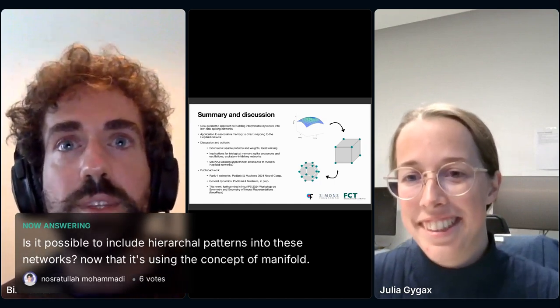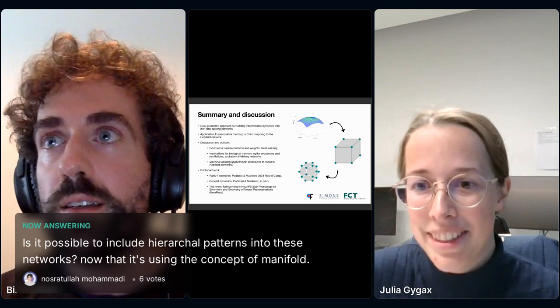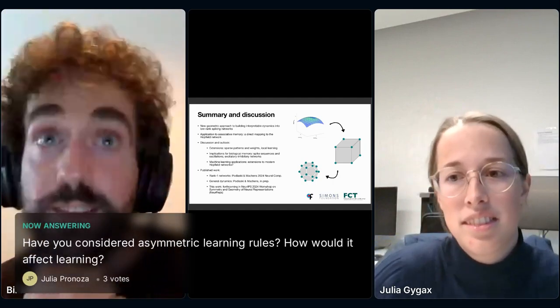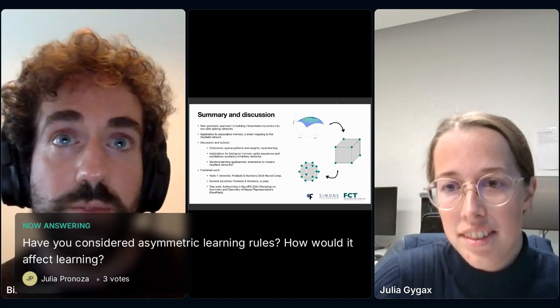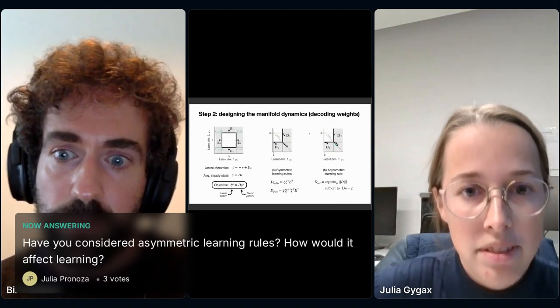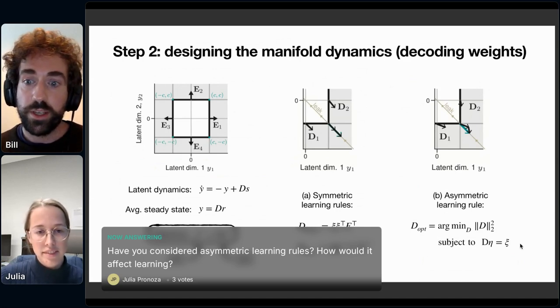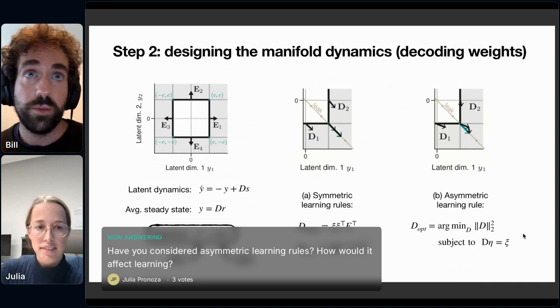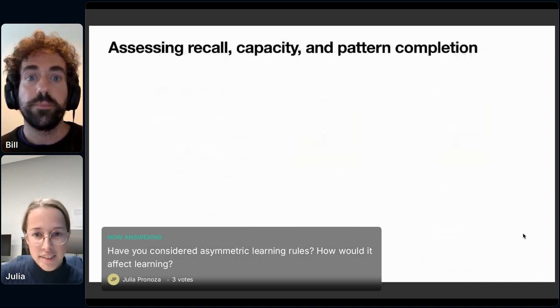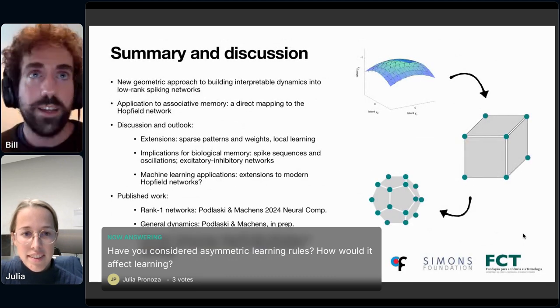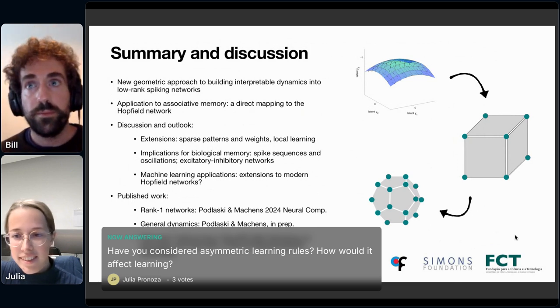Maybe let's wait if there is a clarification in the chat and otherwise in the meantime let's go on to Julia's question. Have you considered asymmetric learning rules and how would it affect learning? Yes, thanks for the question. To clarify, are my slides still showing? Yes, they're still there. This optimized learning rule shown here is actually an asymmetric rule. It doesn't assume symmetric connectivity and actually is the rule that we found works the best. That said, it still finds solutions that are heavily symmetric. It's just that it allows for asymmetric connections.